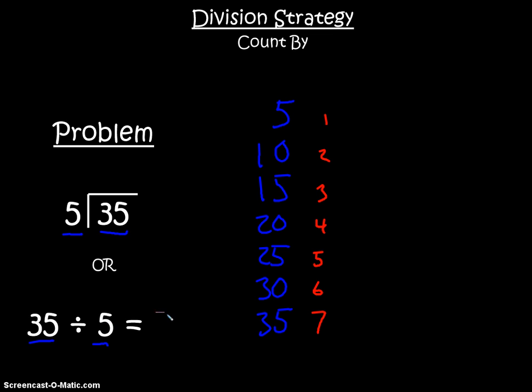So 35 divided by 5 is 7, or if we see it written this way, 35 divided by 5 is 7.